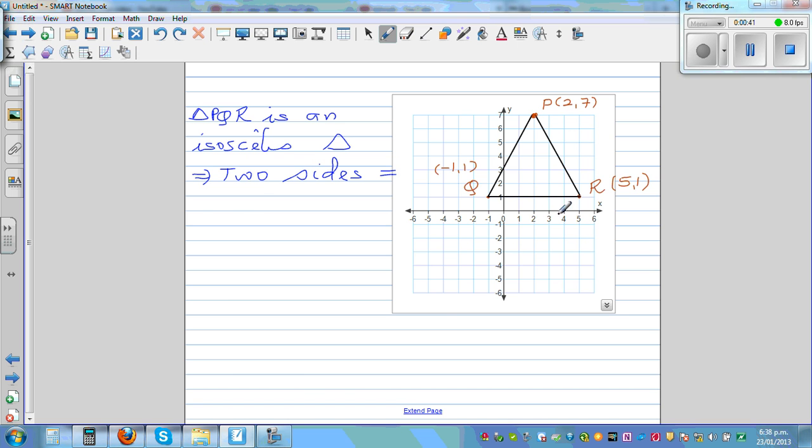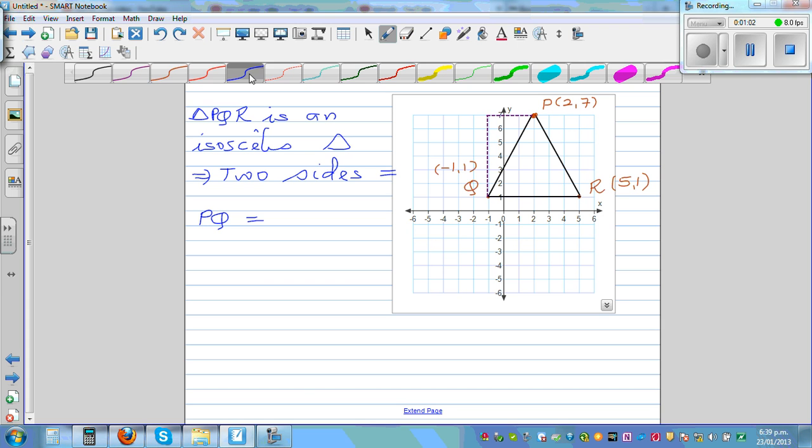Let's find side PQ. What's the length of PQ? To find the length of PQ, let's draw a right-angle triangle. Let's join P and Q by a right-angle triangle like this. This is a right-angle.